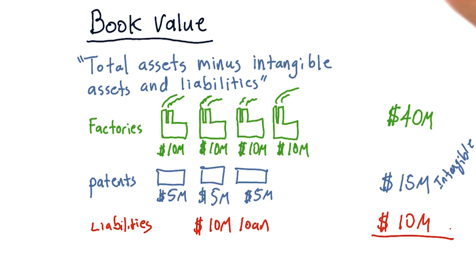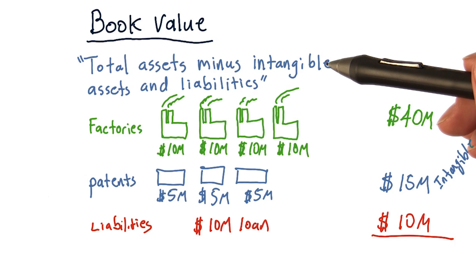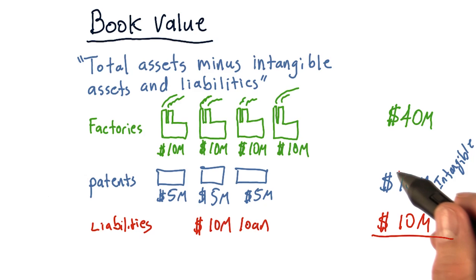If we follow this rule that book value is total assets, so total assets are this $40 million plus the $15 million or $55 million, minus intangible assets. So we just don't count these intangible assets and liabilities.